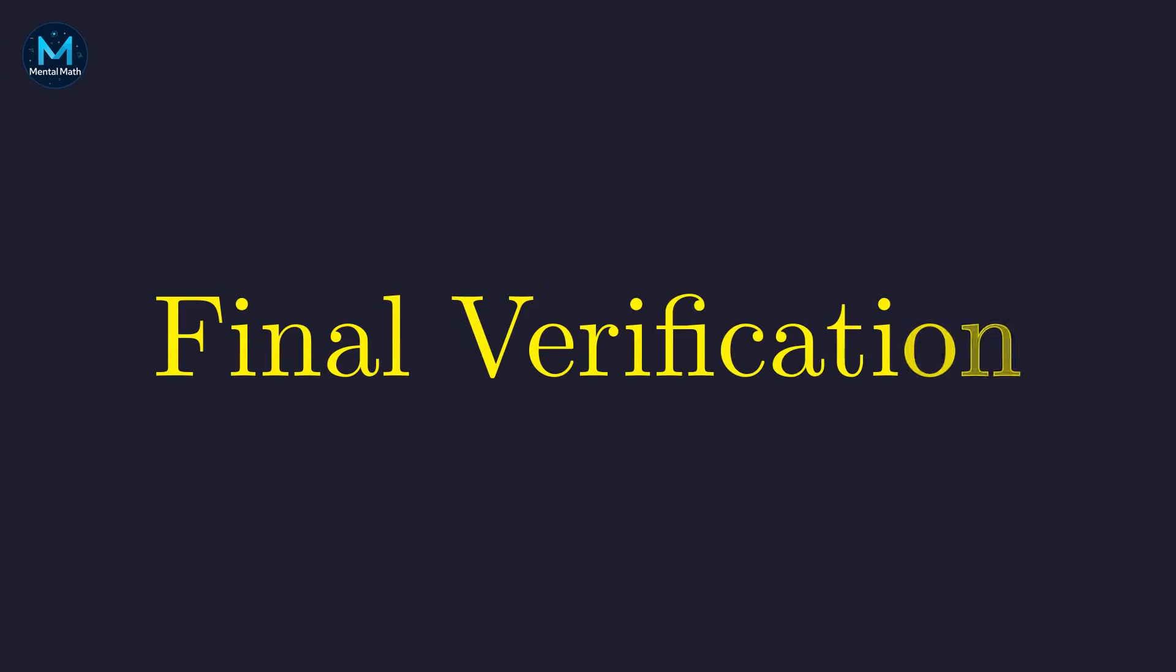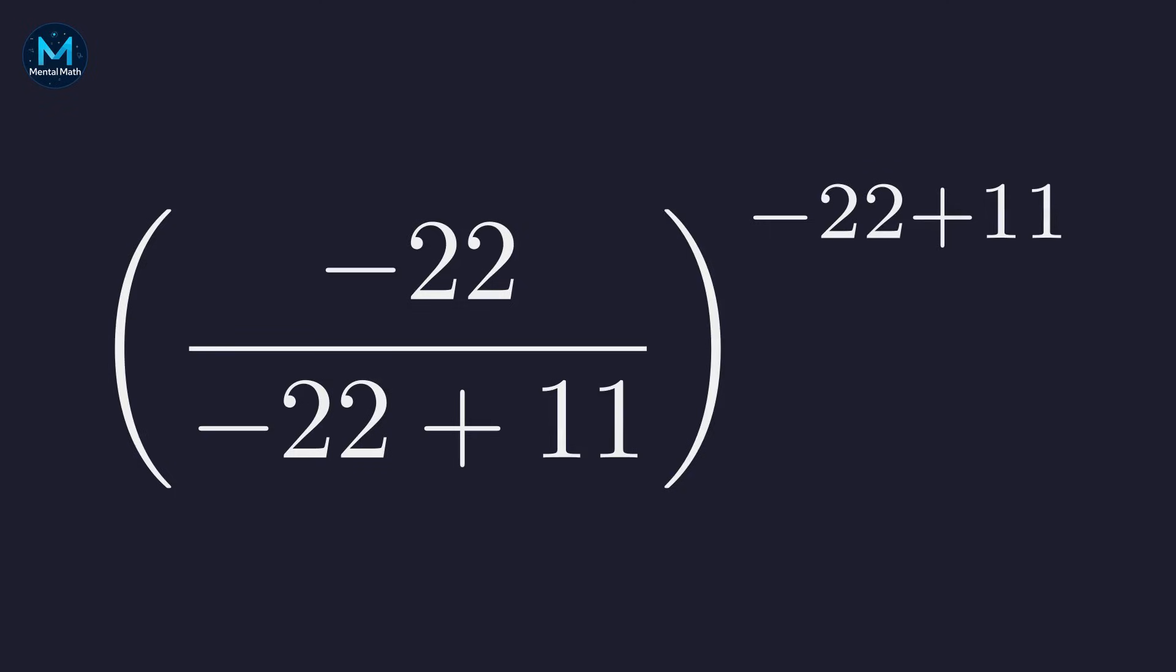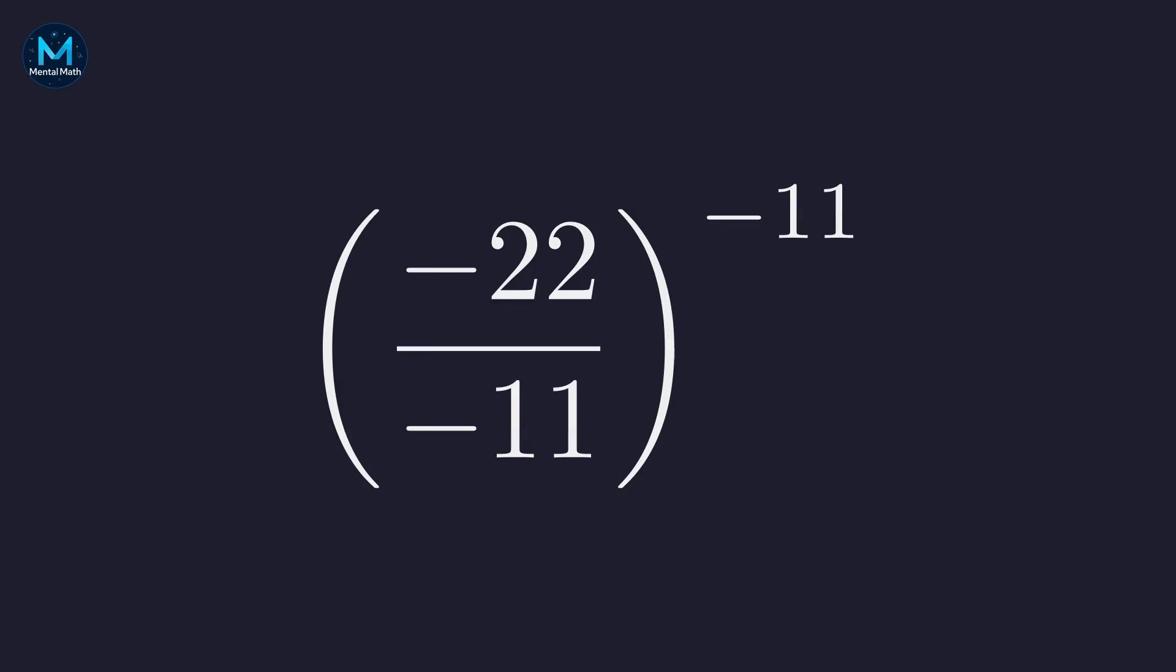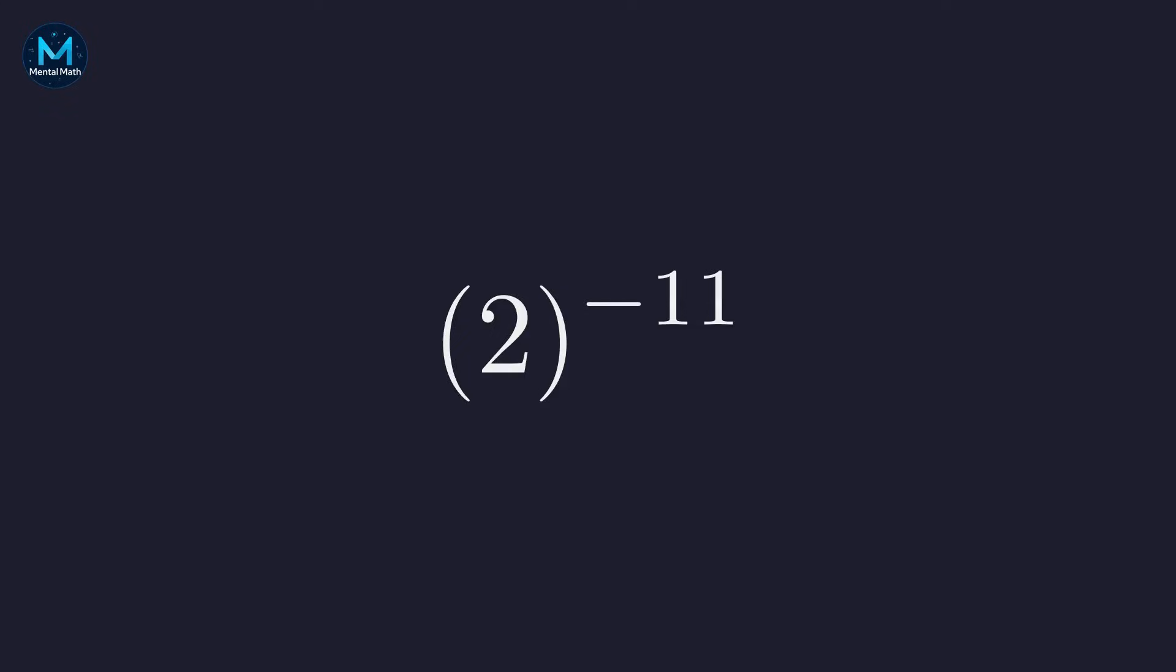Let's verify this works in the original equation. We'll plug x equals negative 22 into the left side, substituting negative 22 for every x. The base becomes negative 22 over negative 11, and the exponent is negative 11. That simplifies to 2. 2 to the negative 11 is 1 over 2 to the 11th, and that's 1 over 2048. Exactly what we started with.